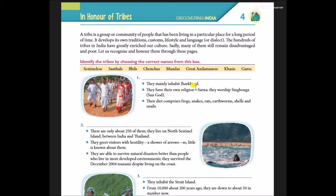They mainly inhabit Jharkhand. They have their own religion, Sarna. They worship Singbonga, the Sun God. Their diet comprises frogs, snakes, rats, earthworms, shells and snails. The name of this tribe is Mundas — M-U-N-D-A-S. The first answer is Mundas.